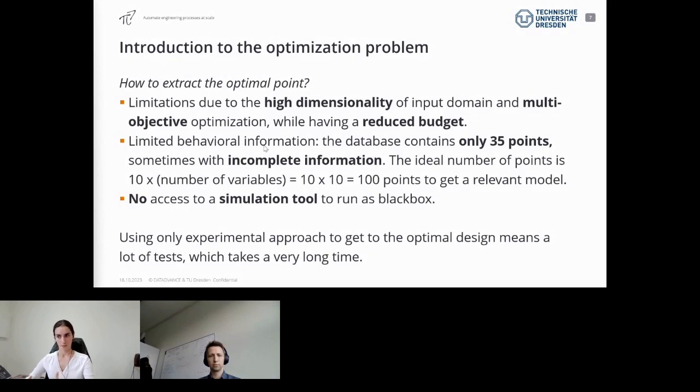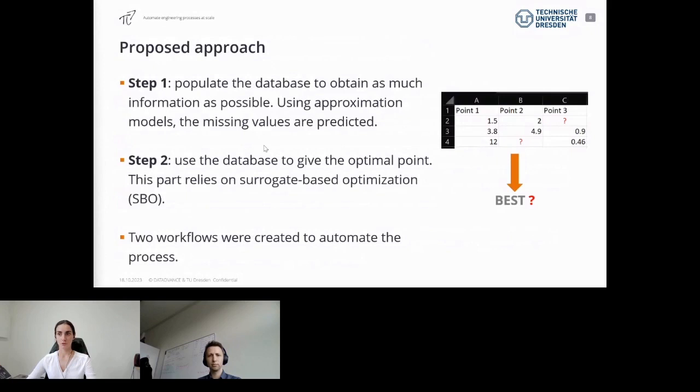Another limitation was that we didn't have any access to any simulation tool to run as a black box in a loop on an iterative process in order to get this input-output relationship more easily. Because of that, we only had experimental approach and data to get some information, but at the same time it requires a lot of tests, which is very expensive in terms of money and time. There comes P7. The proposed approach was to go through two steps. The first one was to extract from the information we had as much information as possible. The problem was we had this kind of database with some points that were complete but some others that were not. So the first step was to actually populate this database in order to have a prediction on those values here. To do so, we used the approximation model capabilities of P7 to build some prediction models and to make some predictions about those missing points.